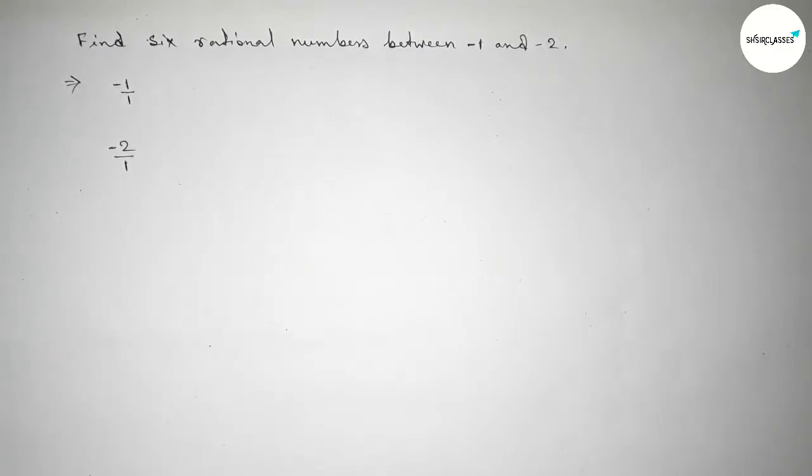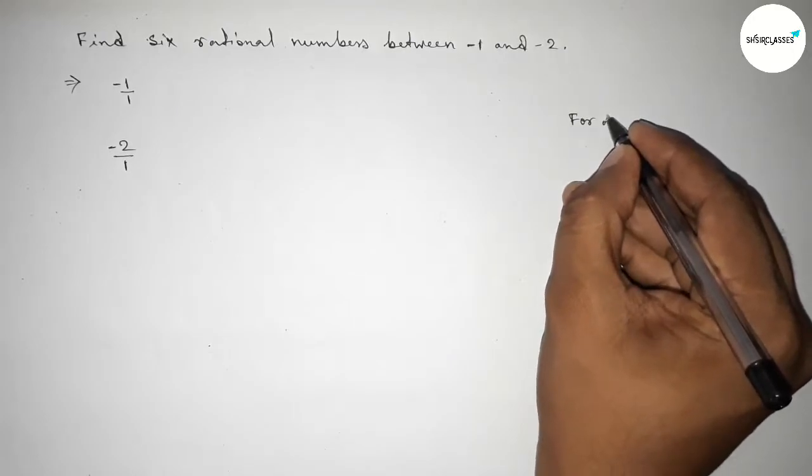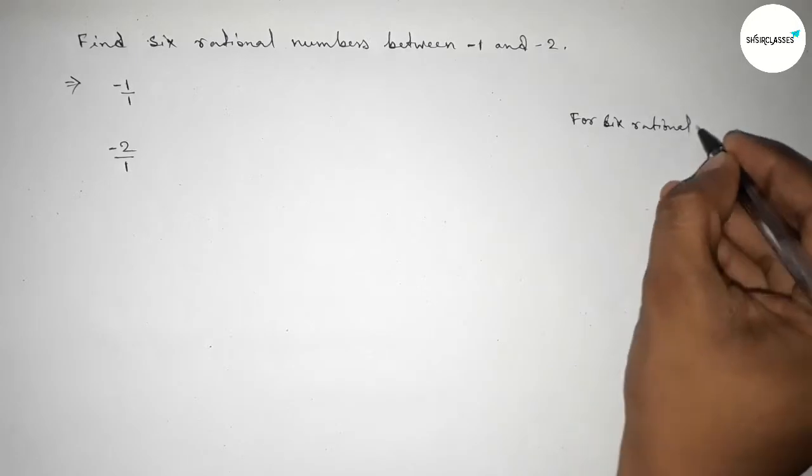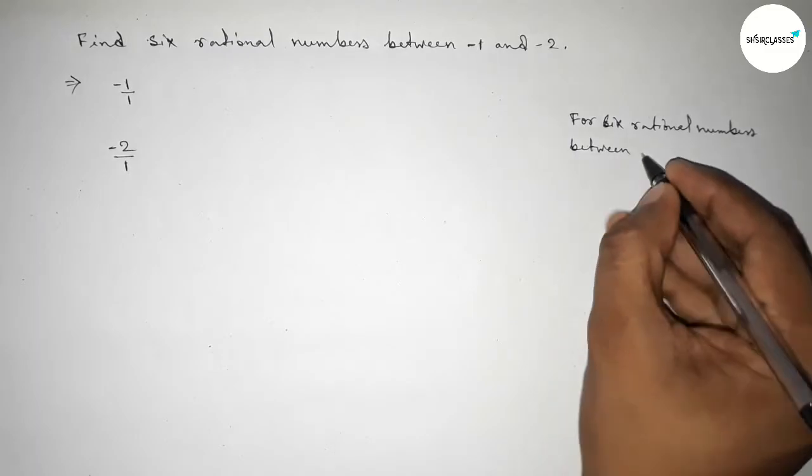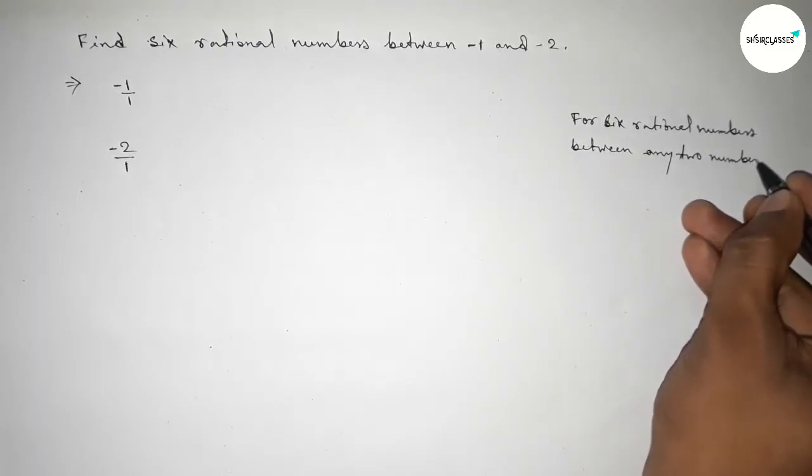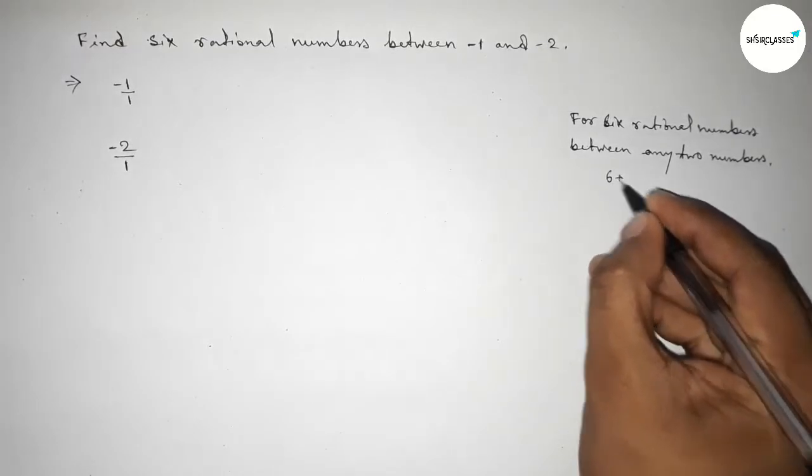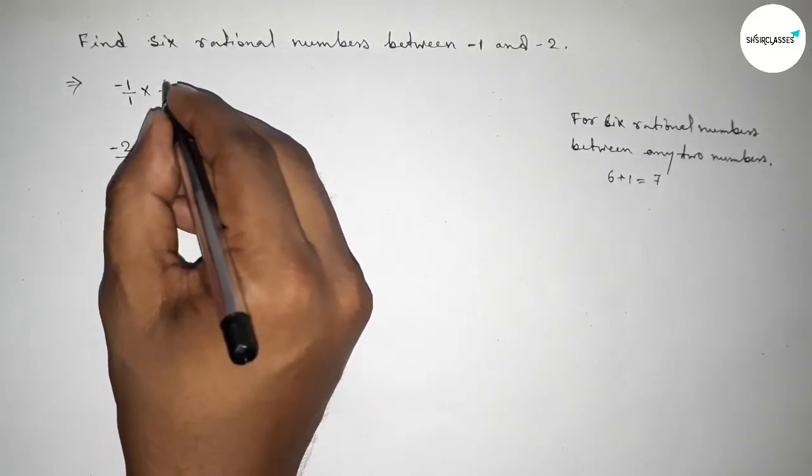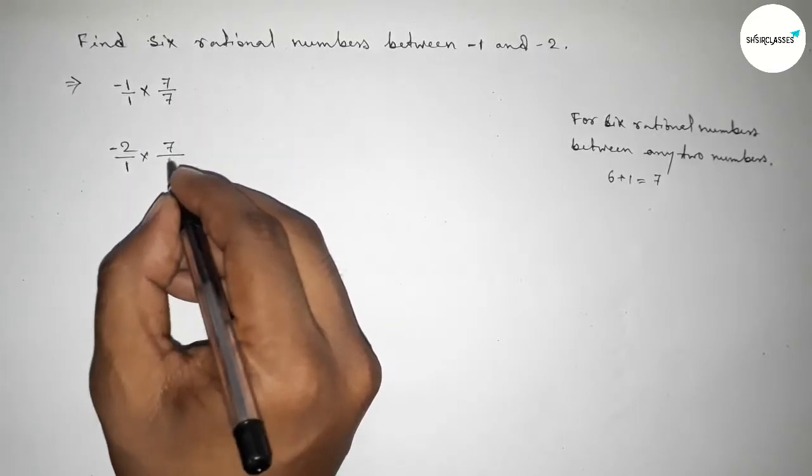Now we can write minus 1 as minus 1 over 1 and minus 2 over 1. Now, roughly discussing here an important method. For finding six rational numbers between any two numbers, we have to follow this method. Here the method is we should multiply both numbers by 6 plus 1 equal to 7.